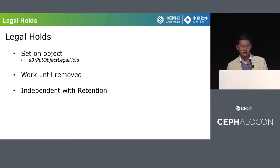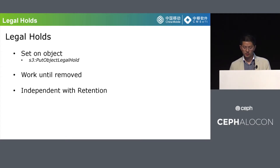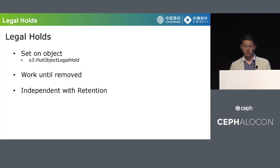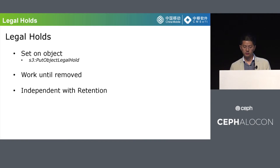In addition to the retention period, the user can also set a legal hold on the specified object to protect the data. Legal hold has no retention period — once set, it remains in effect until it's removed. The put-object-legal-hold permission is required when the user sets or removes the legal hold. Legal hold is independent of the retention period. After the bucket's object lock is enabled, the user can set or remove legal holds regardless of whether the object is protected by a retention period. For an object that has both a retention period and a legal hold, the user can't delete or overwrite the object until the retention period expires and the legal hold is removed.